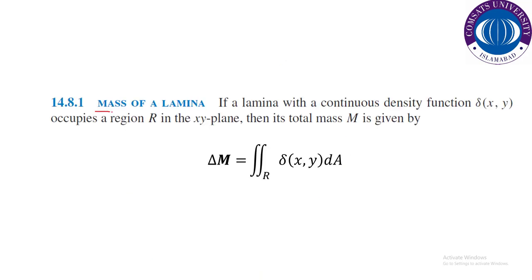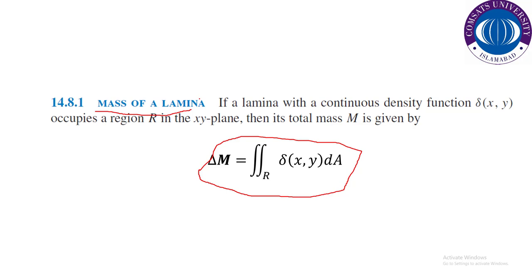Mass of a lamina: from the last derivation, we finally concluded that the mass could be represented in the form of an integral. So if we have to find the mass of a lamina — whether it is homogeneous or inhomogeneous — with the help of this double integral we can calculate the mass.